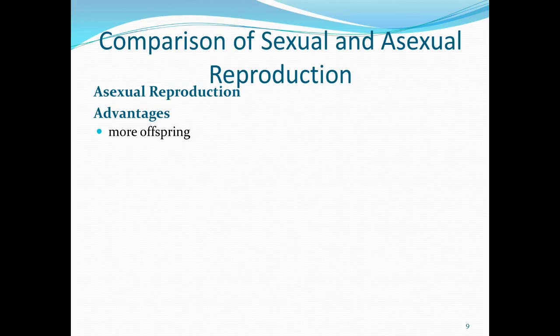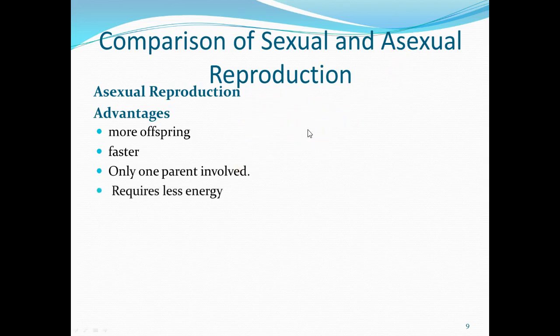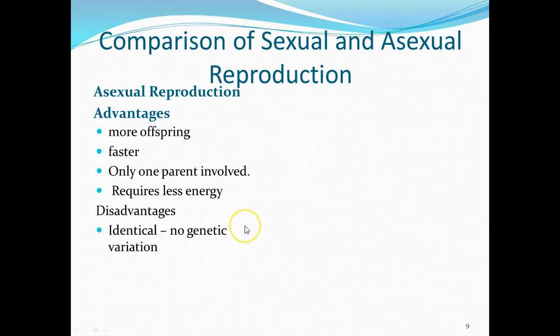Asexual reproduction has some advantages. Number one, you can make more offspring. Number two, it's much faster. Asexual reproduction occurs generally much faster than sexual reproduction. You only have one parent, so there's no need to find a mate. One organism can reproduce itself, and it requires less energy. The disadvantage is that all the offspring are going to be identical — there's no genetic variation. If everybody's exactly the same, one incident can wipe out the entire population.